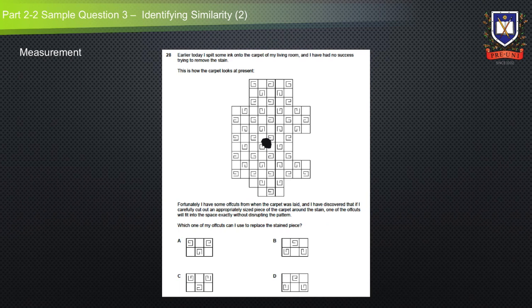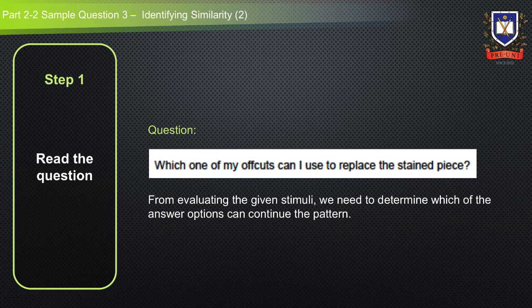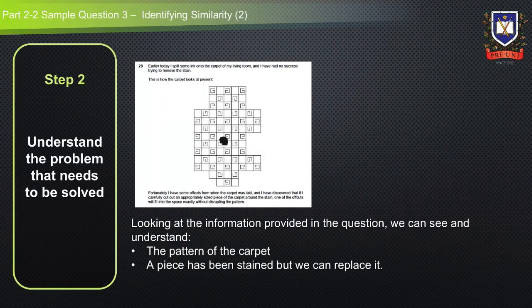Let's apply the general approach method to solve the question. The first step is to read the question and determine what it is asking. Since it is asking which one of the off-cuts can be used to replace the stained piece, we need to evaluate the given stimuli and determine which answer option can replace the stain section and continue the pattern. This is a form of problem-solving using the process of elimination.